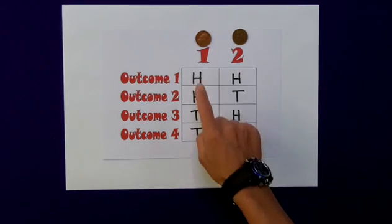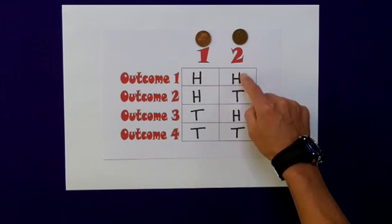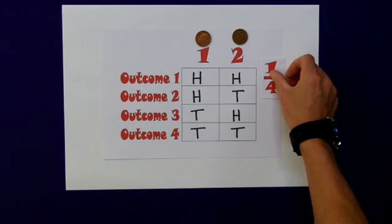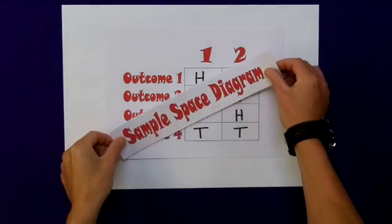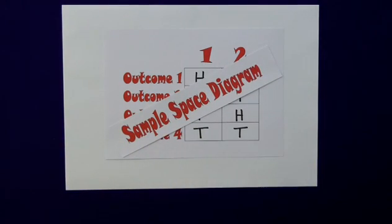So my chances of throwing two heads together are actually one out of the four combinations, and my chances are one-quarter, one in four. Now, this type of diagram is called a sample space diagram, and it shows all the possible outcomes for that particular event.